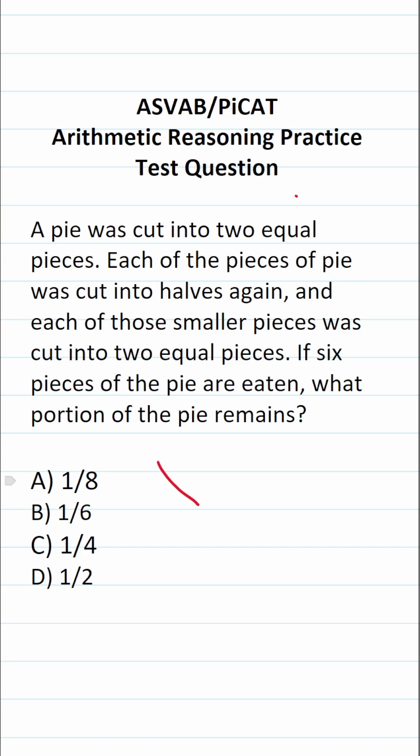So in order to answer this question, you first have to realize that a pie is in the shape of a circle. And let's go through this step by step. First, we know the pie is cut into two equal pieces. So let's cut this pie into two equal pieces as best we can here.